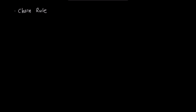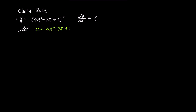To understand how this box rule was created, let's solve a problem using the chain rule. Suppose we have y equals (4x² − 7x + 1) to the power of 3, and we want to find dy/dx. To differentiate, we'll substitute u as 4x² − 7x + 1, so now y becomes u to the power of 3.